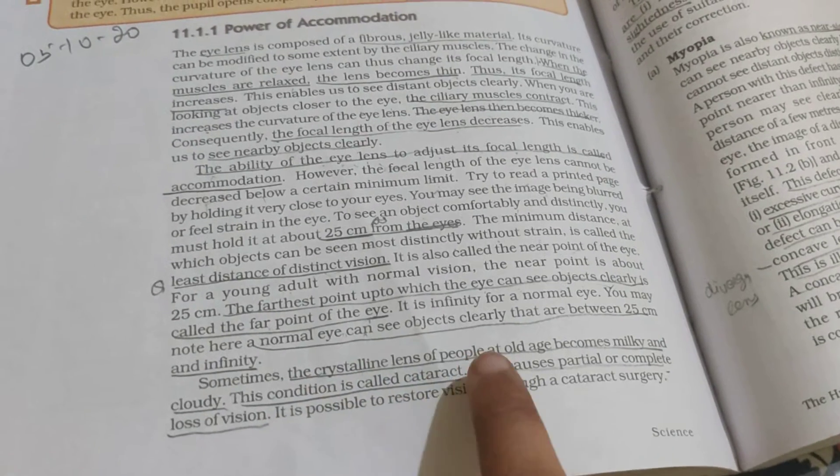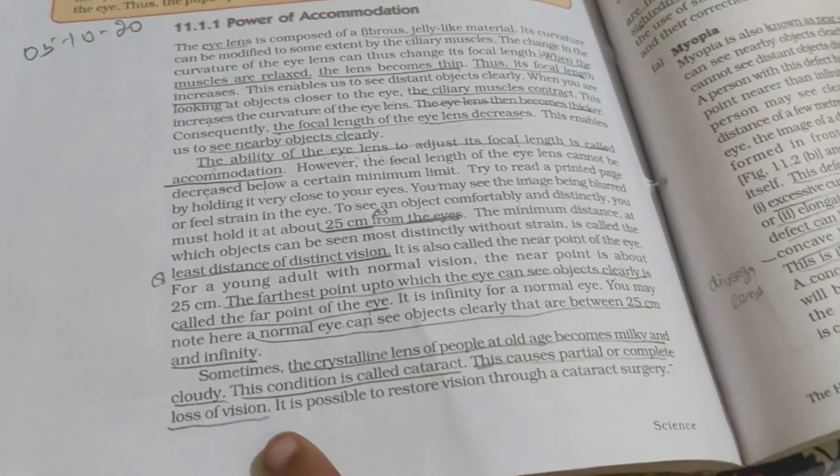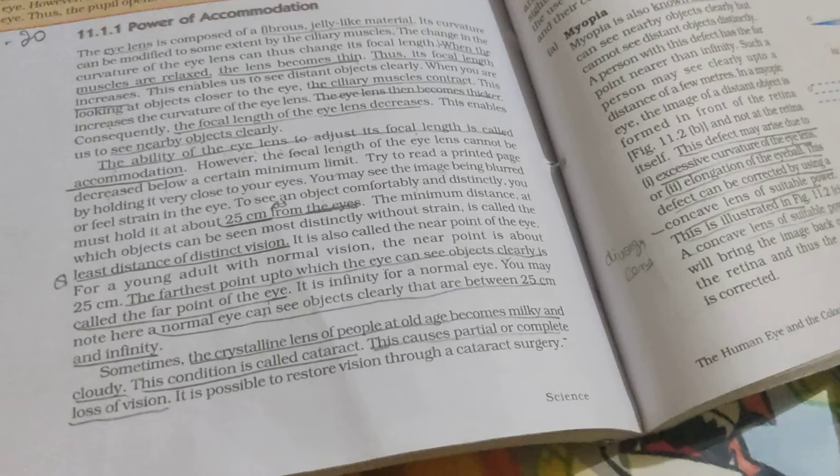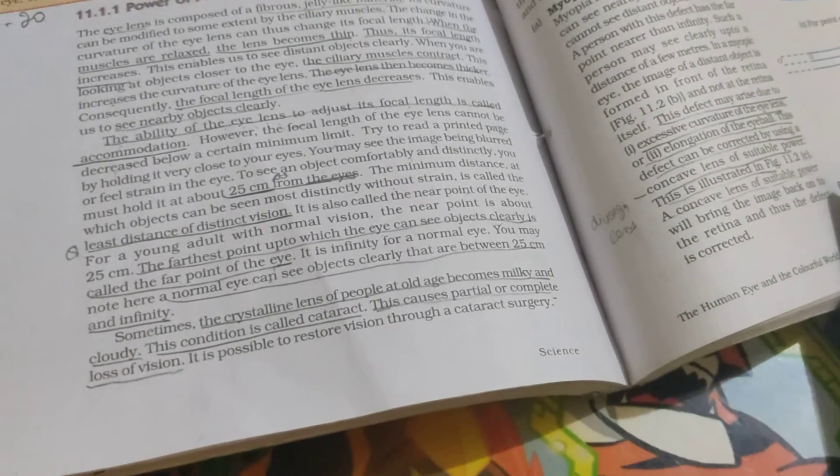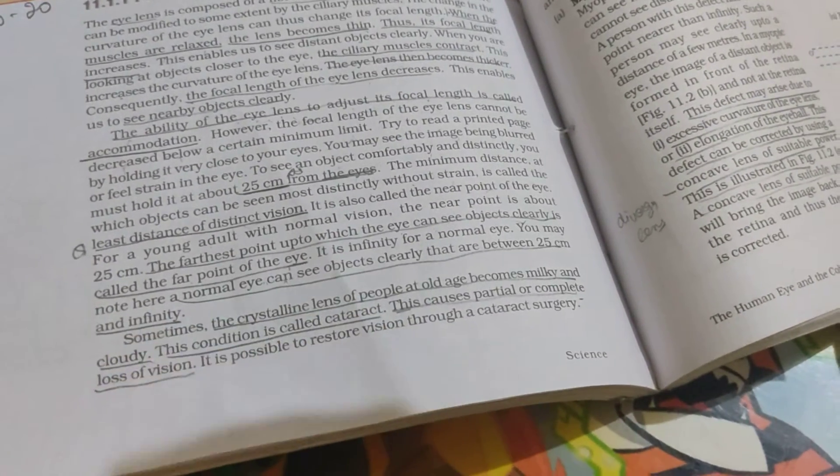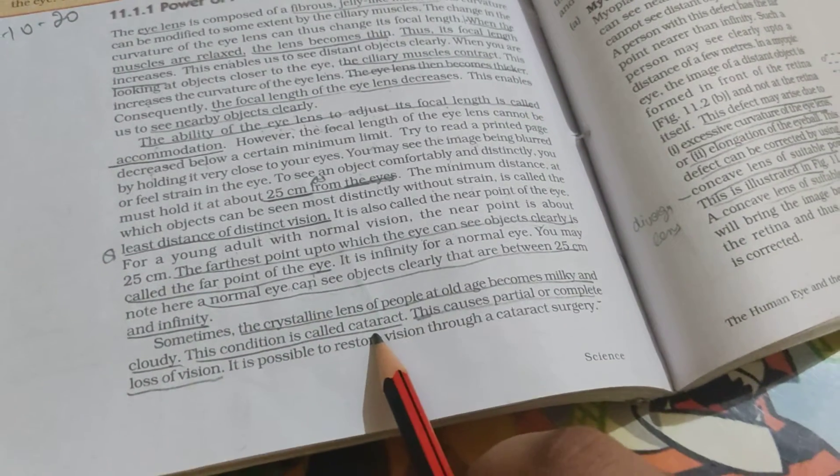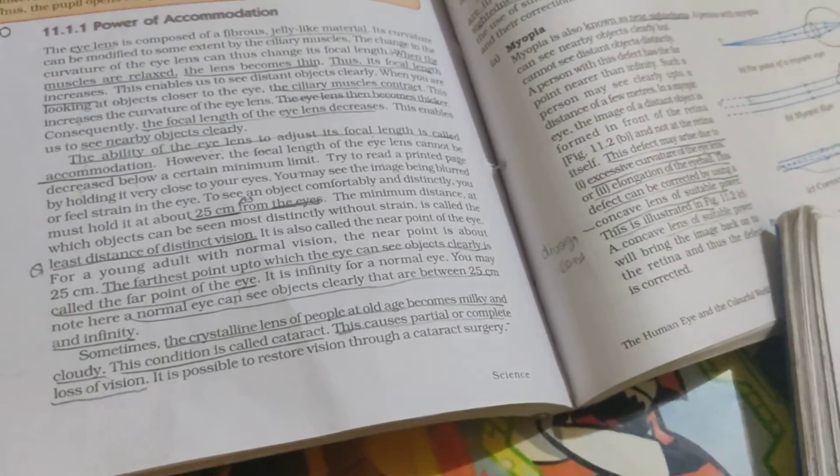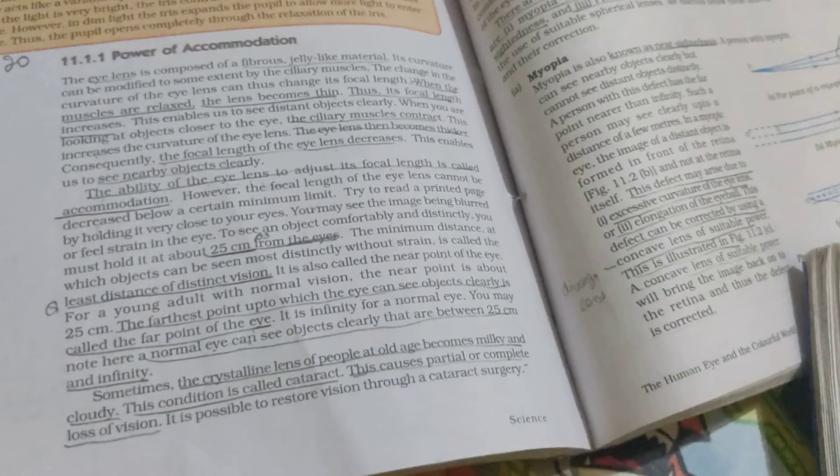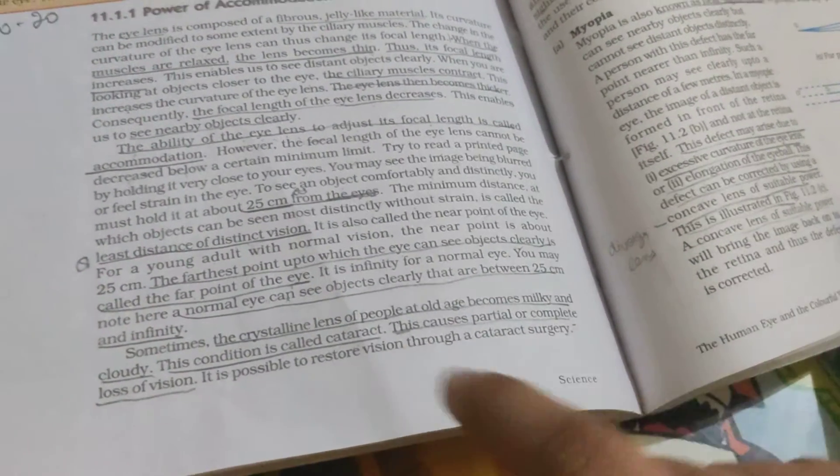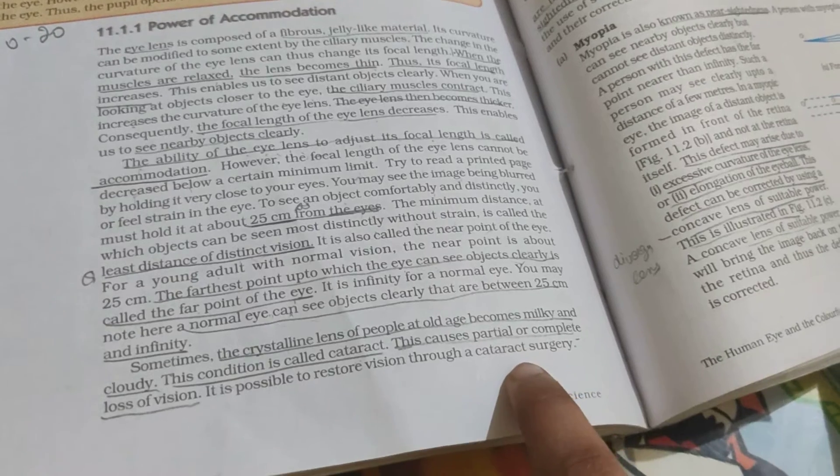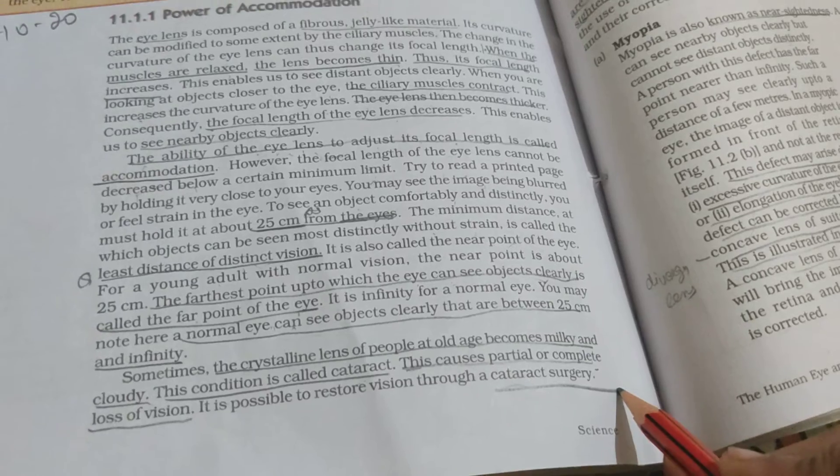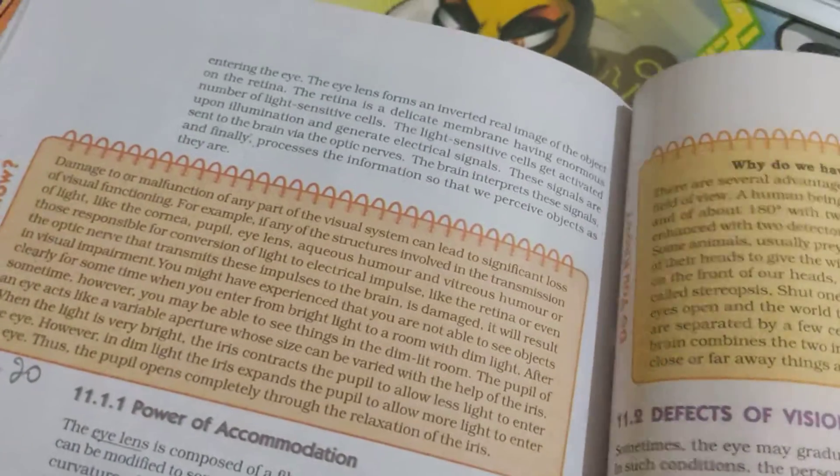Sometimes the crystalline lens of people at old age becomes milky and cloudy. It is possible to restore vision through cataract surgery. We can get back the vision through this procedure.